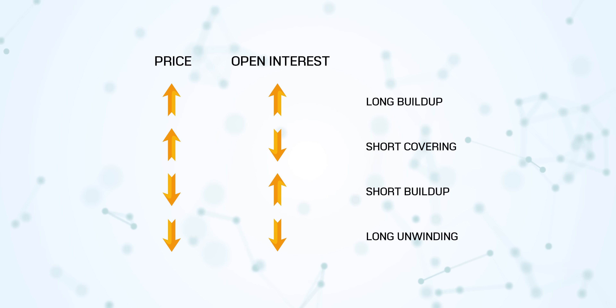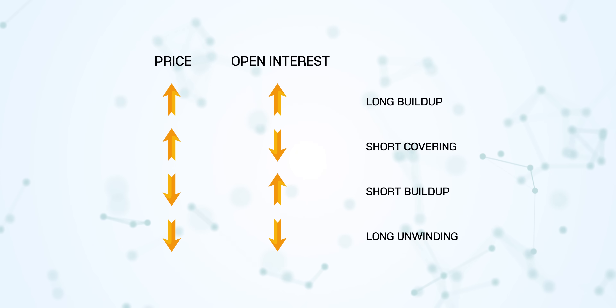So there are basically four things: long buildup, long unwinding, short buildup, and short covering. Therefore, we don't look only at prices — we have to look at price and open interest together, and then we can come to a conclusion. But let me tell you, this is just a general guideline, not the golden rule. I've shown you with the example of Bajaj Finance because it recently came down and went up. Hope you enjoyed the video. Thank you for watching.